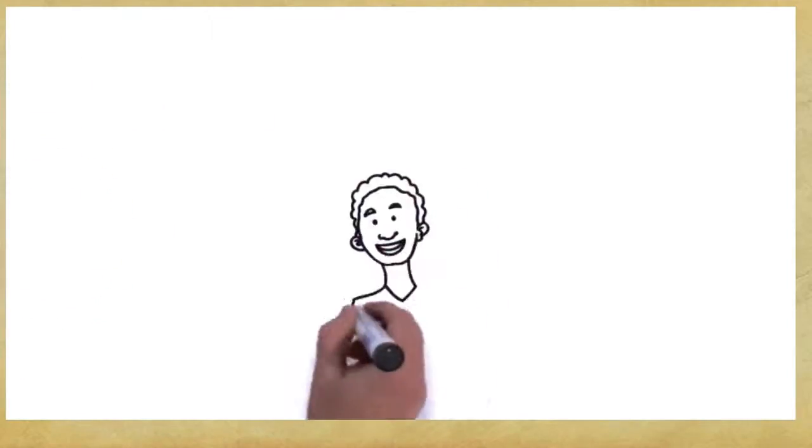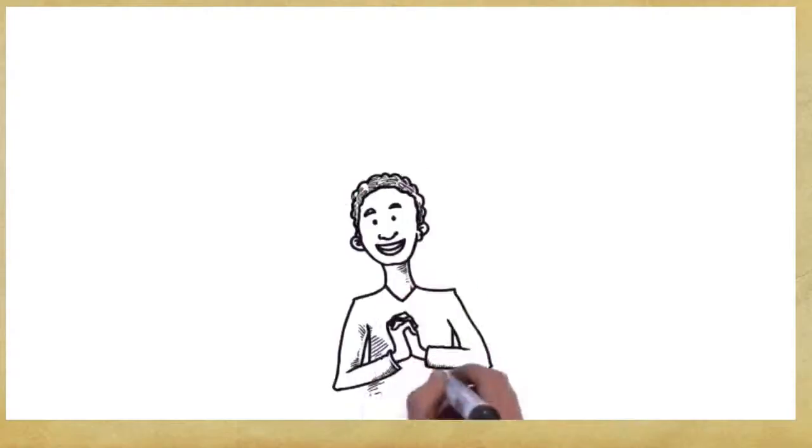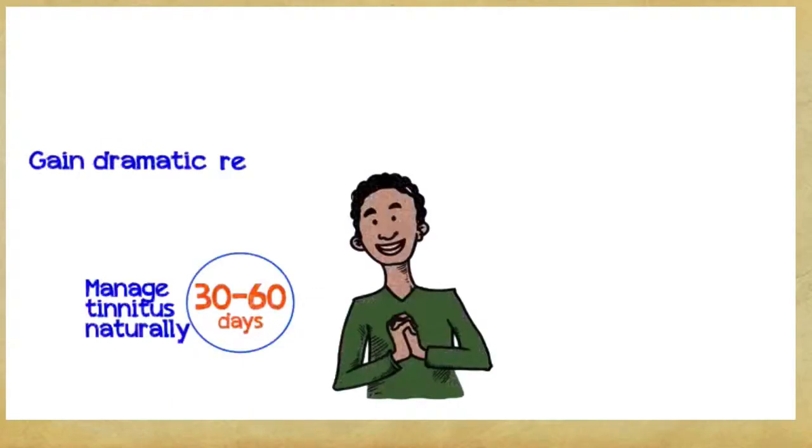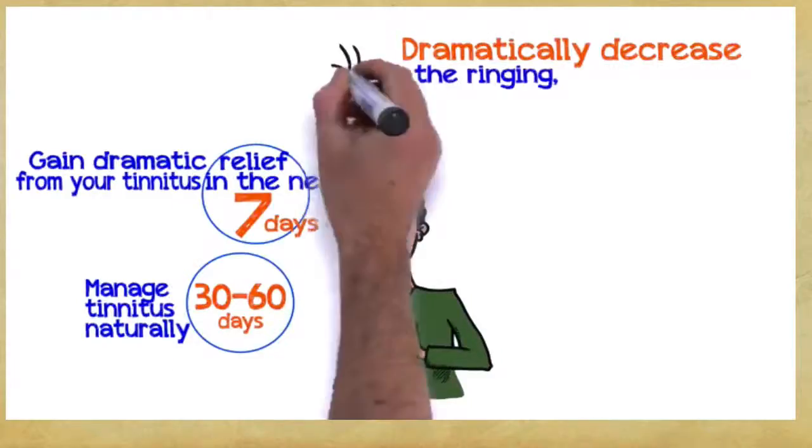So, what can you gain if you embrace these three easy principles? Well, you can manage tinnitus naturally within 30 to 60 days. Gain dramatic relief from your tinnitus within the next seven days. Dramatically decrease the ringing, buzzing, hissing, beeping, clicking,